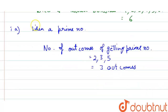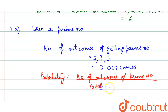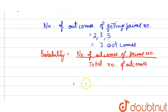The formula of probability is: probability equals the number of outcomes of the prime number divided by the total number of outcomes. The number of outcomes of prime numbers is 3 and the total number of outcomes is 6, so the probability will be 1/2.